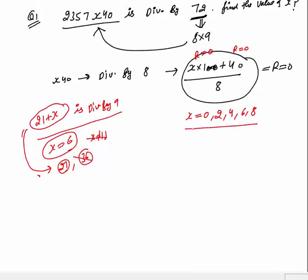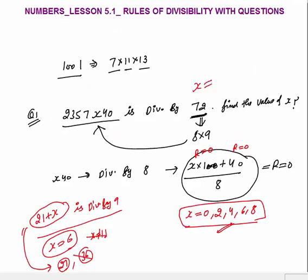The possible values from divisibility by 8 were 0, 2, 4, 6, and 8. But for divisibility by 9, x can only be 6. So the overall value of x is 6. With x = 6, the number is divisible by both 8 and 9, hence divisible by 72. So x = 6 is the final answer.